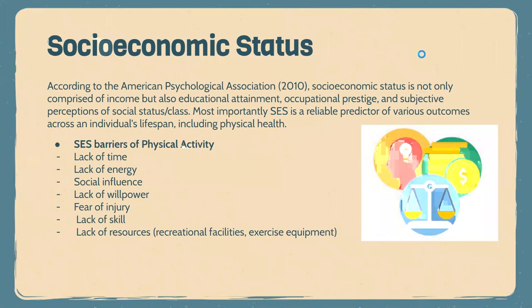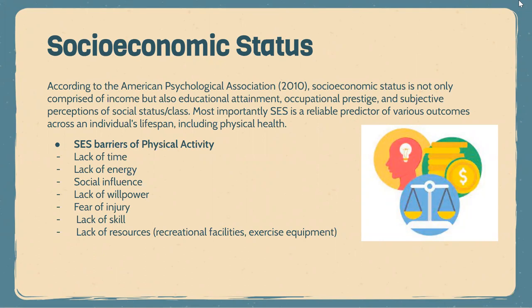Socioeconomic status, according to the American Psychological Association, is not only comprised of income, but also educational attainment, occupational prestige, and subjective perceptions of social status and class. Most importantly, SES is a reliable predictor of various outcomes across an individual's lifespan, including physical health.